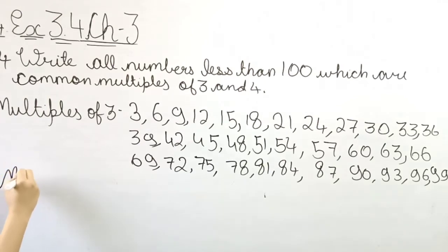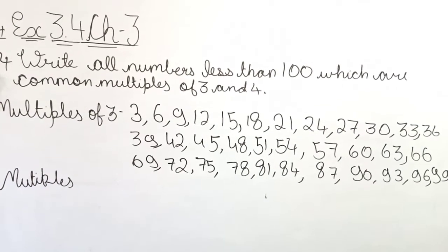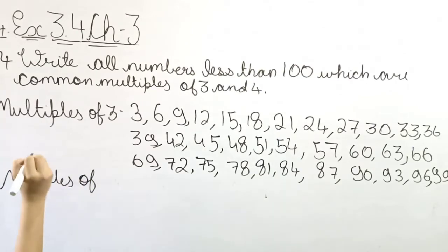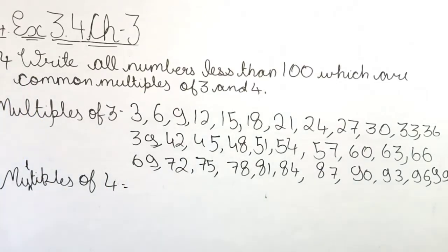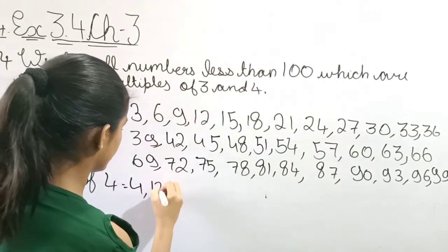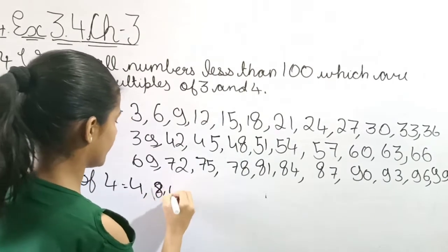Now let's write immediately multiples of 4. Just like we saw that there are so many multiples of 3, there will also be many multiples of 4. 4 ones are 4, 4 twos are 8.